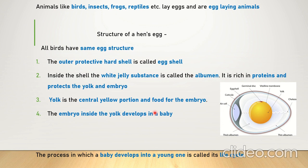From this we learn that animals which give birth to young ones are called mammals, and we discussed their various properties and features. Now let's look at egg-laying animals. Animals like birds, insects, frogs, and reptiles lay eggs and are called egg-laying animals. The process in which a baby develops into a young one through different stages is called a life cycle. We will learn about the life cycles of a bird, a butterfly, a cockroach, a frog, and others.